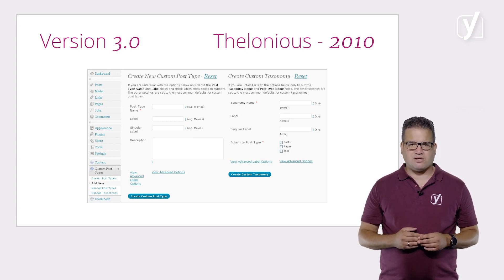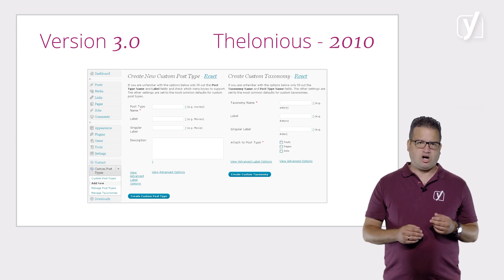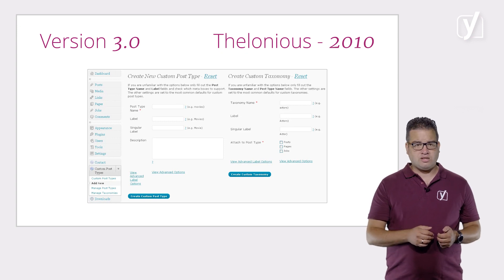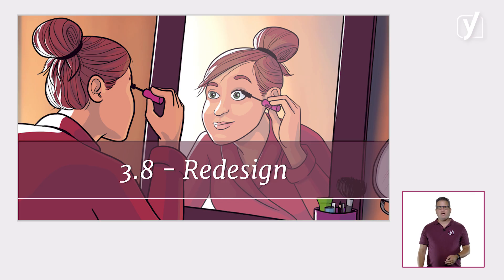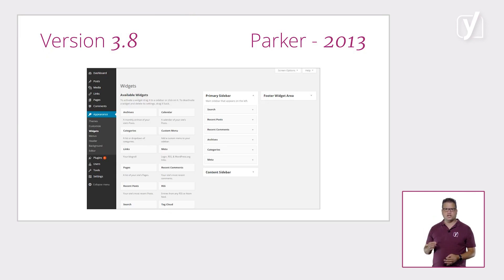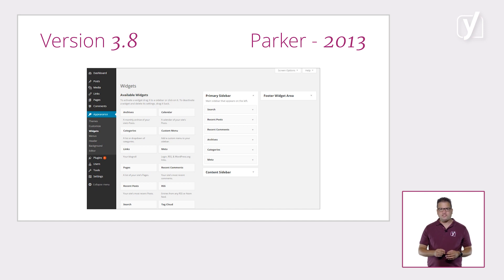It was also around this time that WordPress got a mobile app for on-the-go posting and editing. We fast forward to 2013, when the 3.8 Parker version brought a brand new design. And if you look at this screenshot, you can probably already see glimpses of the latest, current version. In the years that followed, dedicated WordPress developers worked tirelessly on major and minor improvements to the user experience and security.